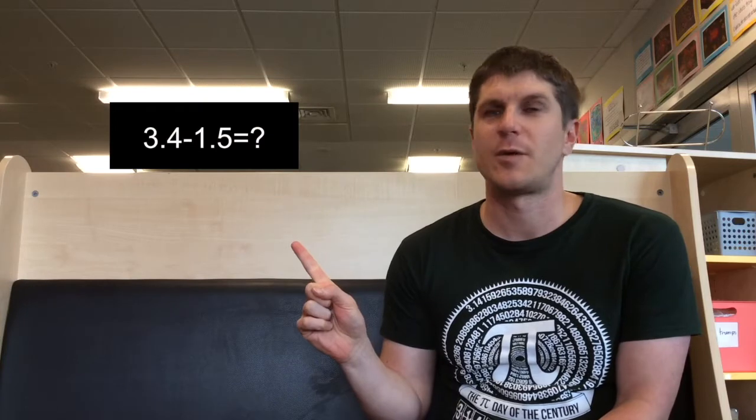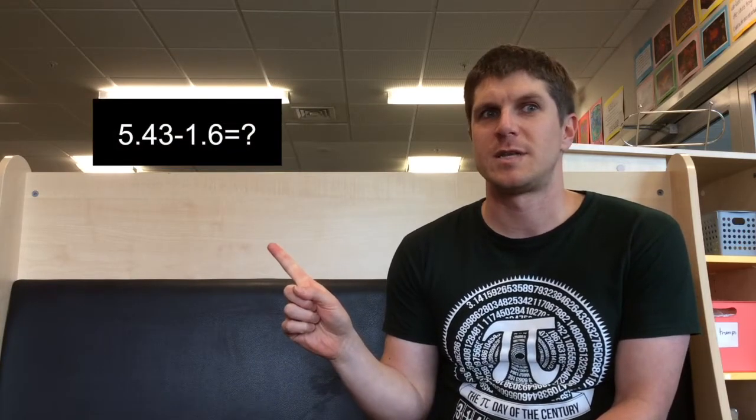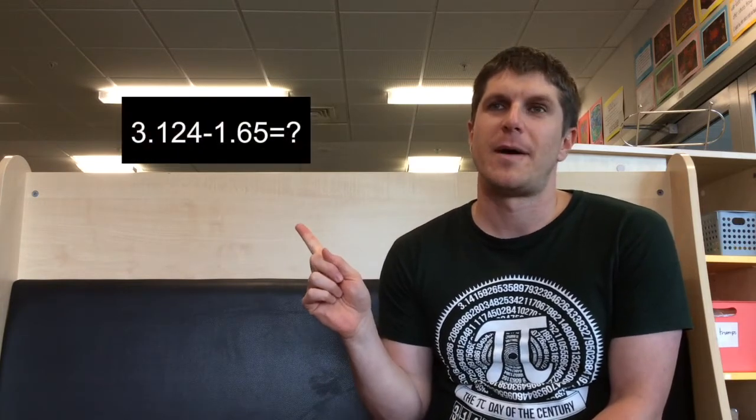Hi there. Welcome to this math strategy video. We're going to show you how to solve different problems. Today, we're going to look at solving subtraction problems with decimals by using place value. We're going to try three problems: 3.4 take away 1.5, 5.43 subtract 1.6, and if you're really brave, 3.124 minus 1.65. We'll use some different materials to learn how to do this.